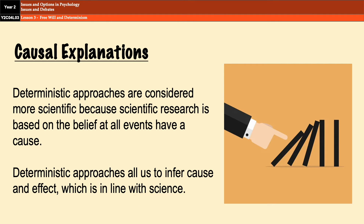I want to spend a couple of minutes on the scientific emphasis on causal explanations. Deterministic approaches are considered more scientific because one of the basic principles of science is that every event in the universe has a cause which can be discovered and explained using general laws. Science seeks to discover whether X causes Y, and deterministic approaches allow us to explore that because they believe all behavior has a cause that can be determined. Therefore, deterministic approaches place a scientific emphasis on causal explanations. There is an exam question about this in the exam questions video, and it is named in the spec — please make sure you are happy with that.